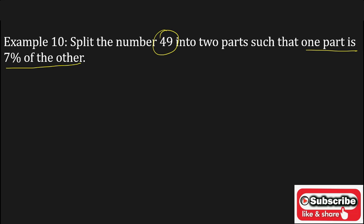The given number from the question is n equals 49 that we have to split into 2 parts x and y, and the condition is y equals 7% of x.